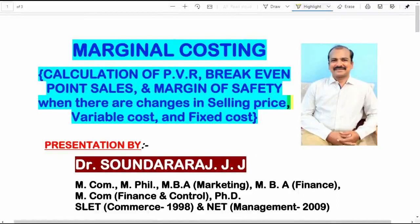Hi everyone, I am Dr. Soundararaj. I am very happy to interact with you all through this video. In this video, I am going to take you through a problem in the chapter marginal costing. This problem is related with the calculation of PVR, break-even point sales and margin of safety when there are changes in selling price per unit, variable cost per unit and the total fixed cost.